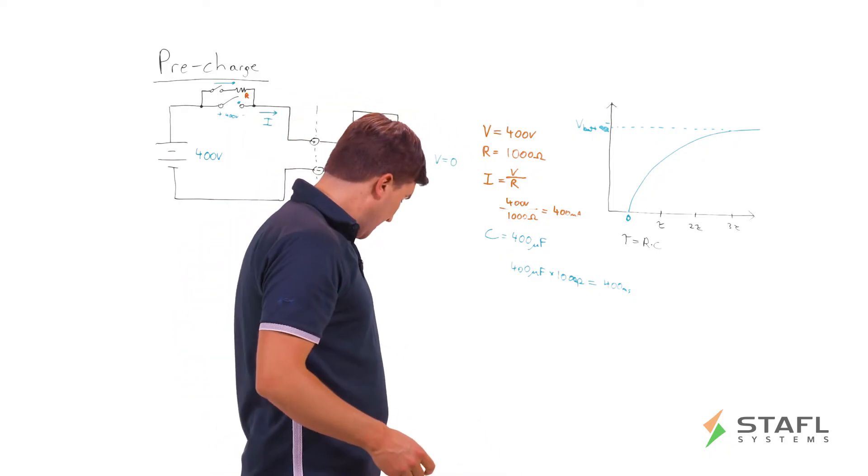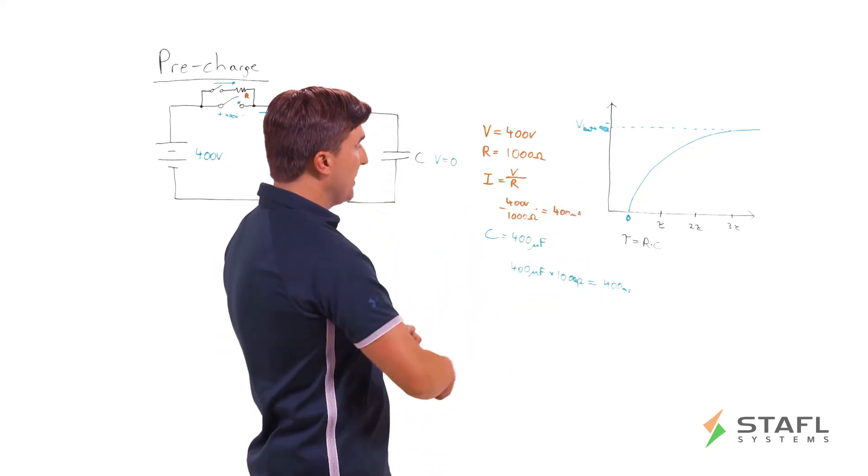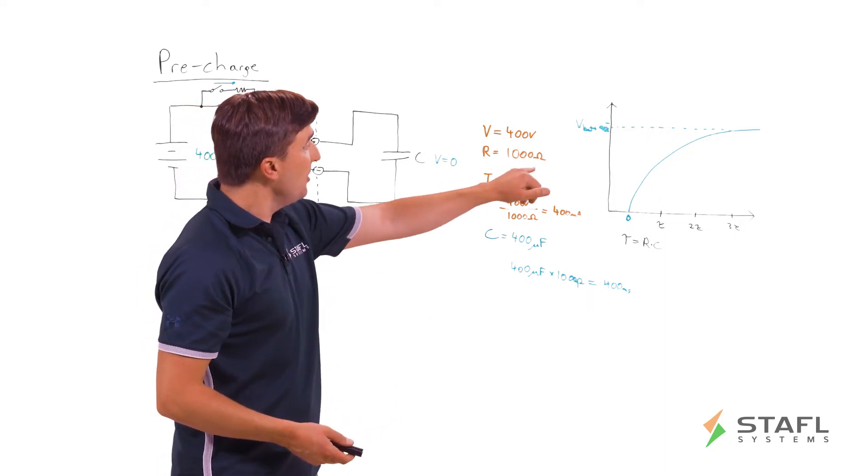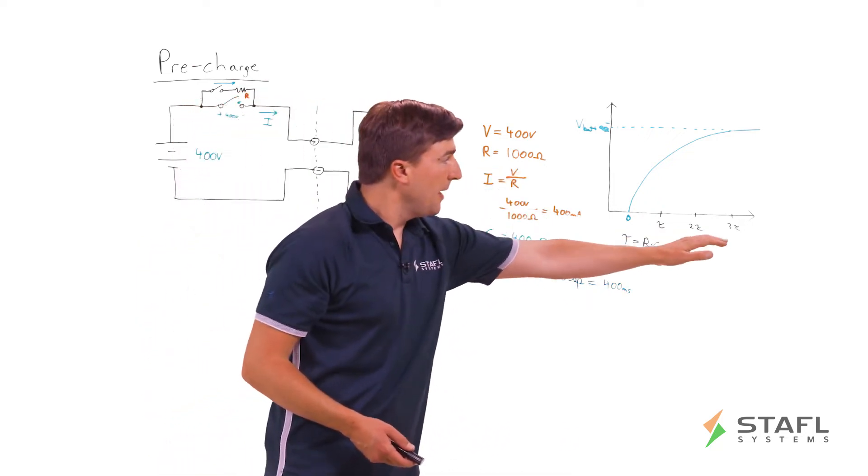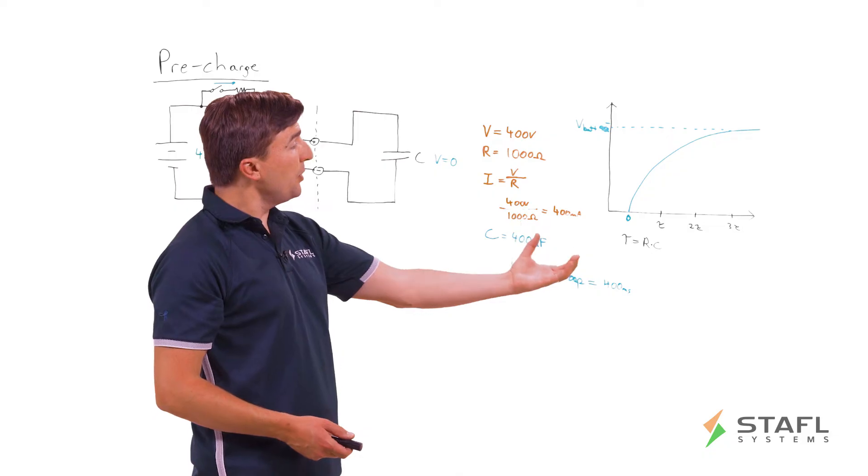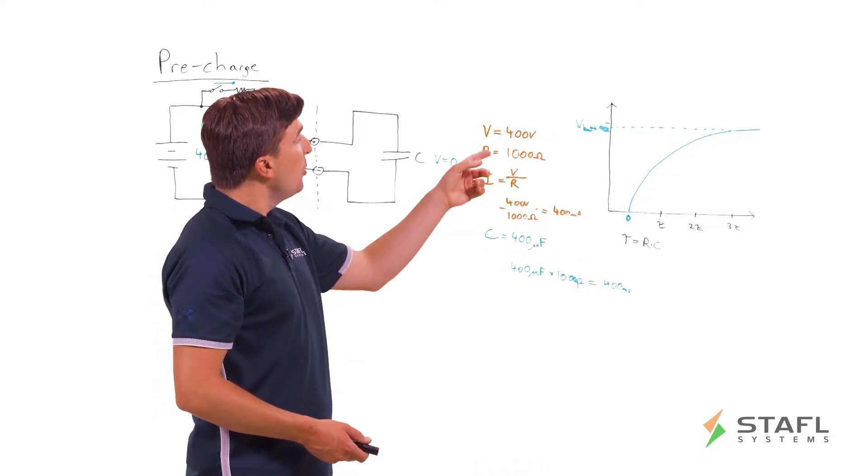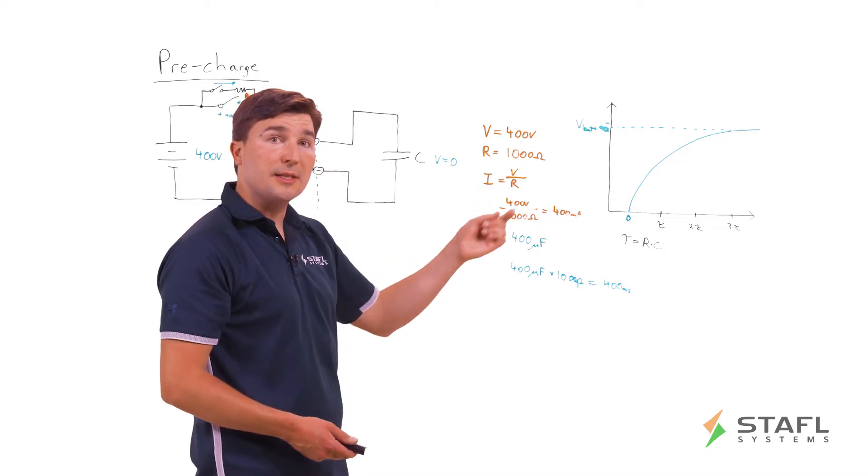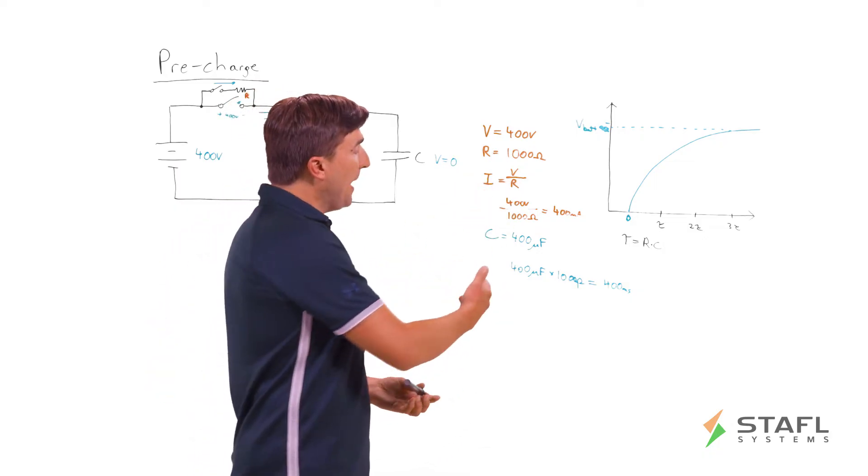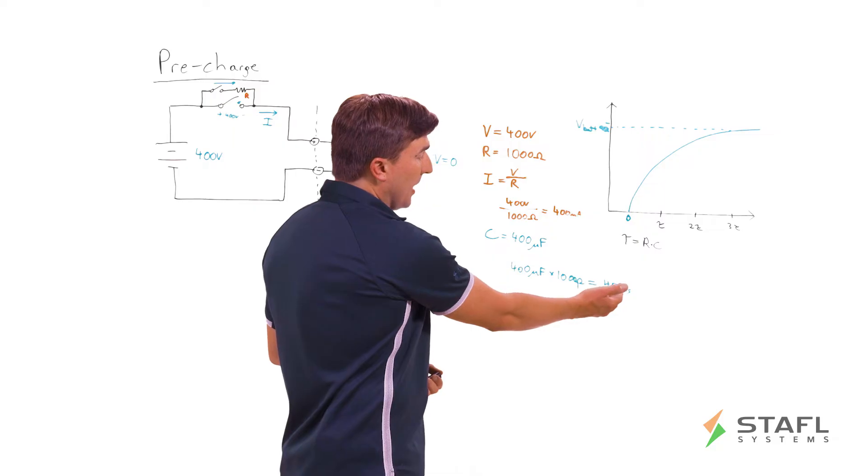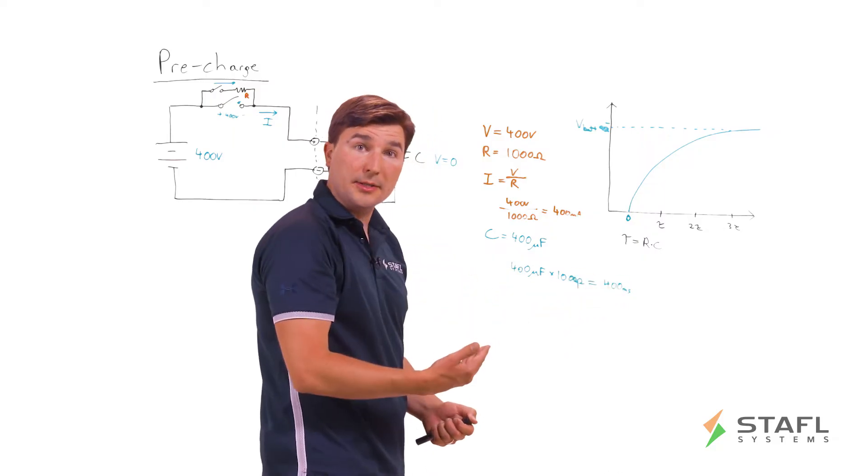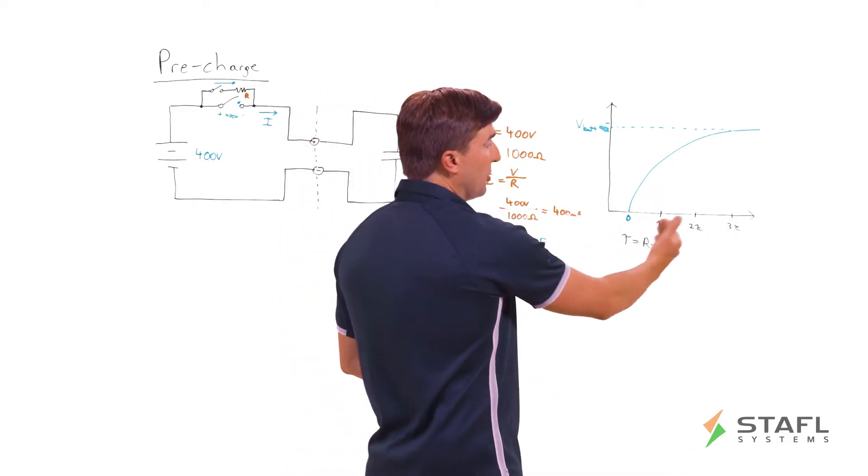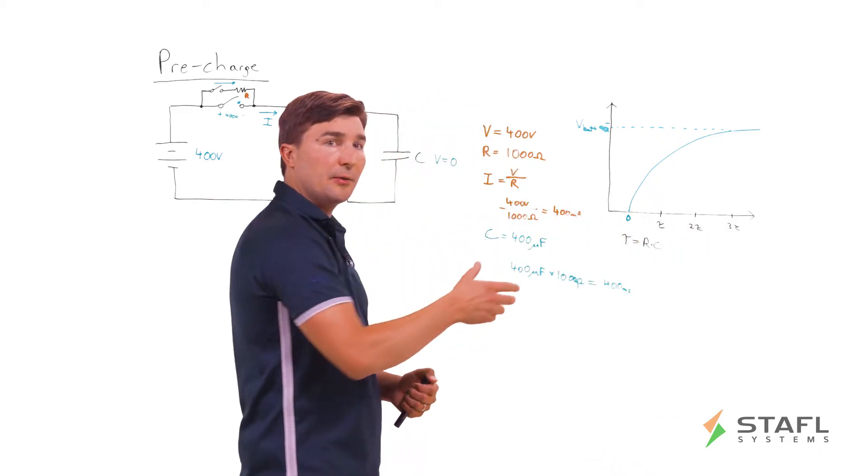Okay, so now that we've determined all this, we have selected a resistor of 1000 ohms because of this time. As you can imagine, if we want the pre-charge time to be reduced, we have to select a smaller resistance value. So for example, if we wanted to select 500 ohms instead of 1000 ohms, that would take our time constant from 400 milliseconds to 200 milliseconds. And likewise, if we have an application that could accommodate a larger pre-charge time, we could choose a higher resistance value. Now you might ask, why not just choose a very small resistance value?